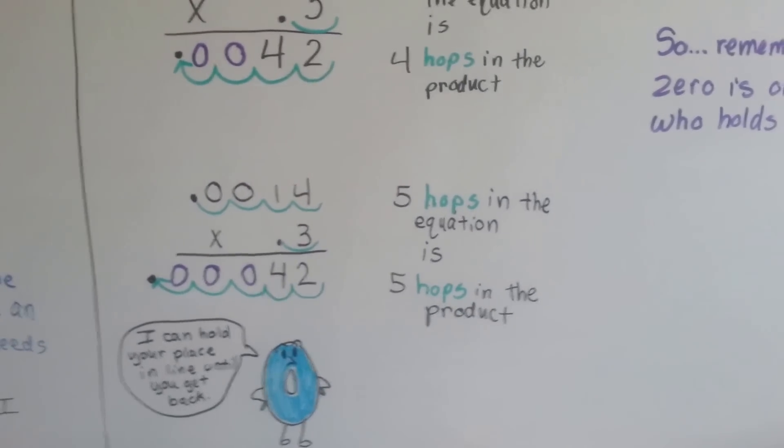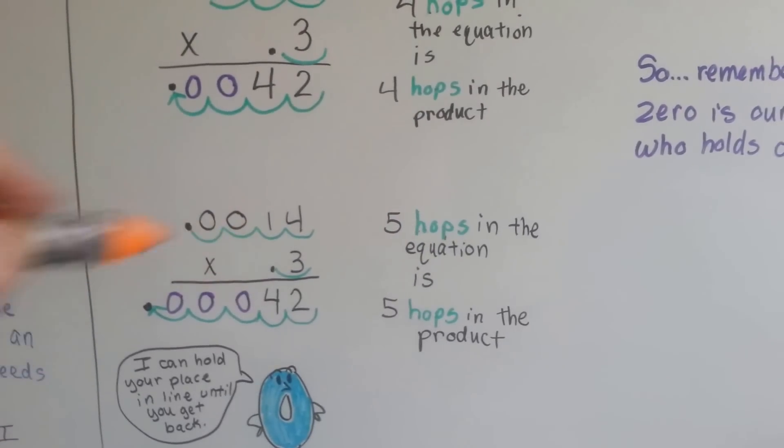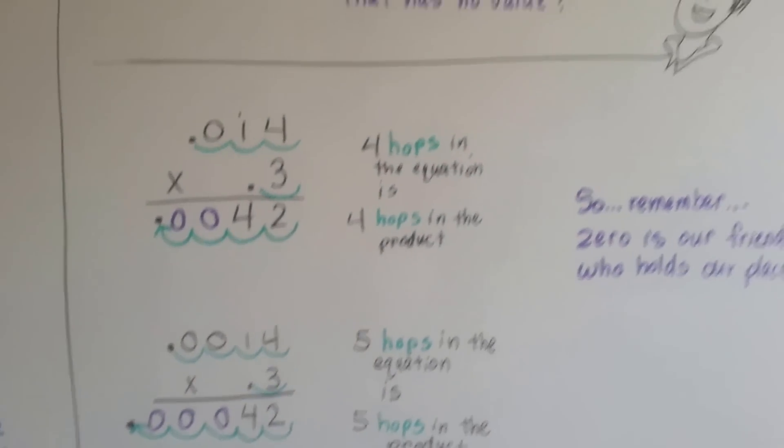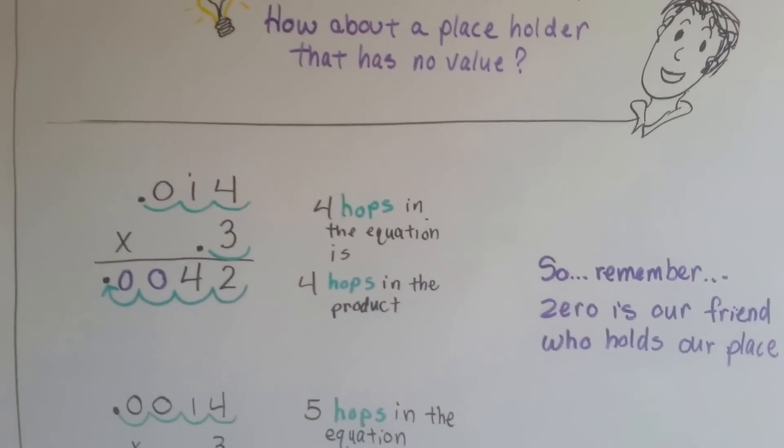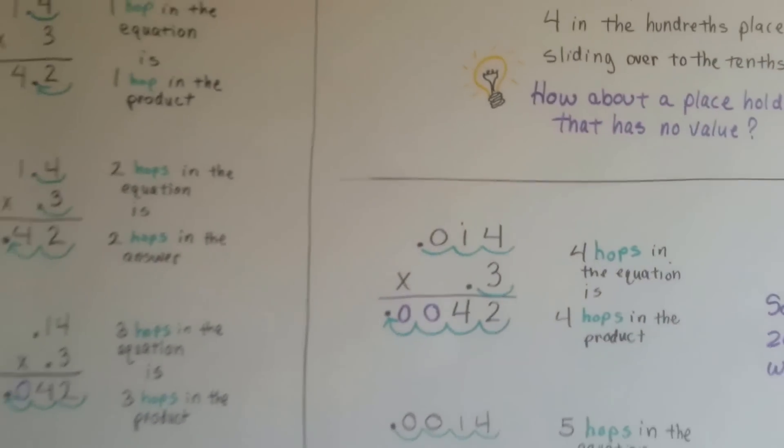So, the zero can hold the place. It has no value, and it's perfect. So remember, zero's our friend, and he holds the place, even though he has no value. That's how we put zeros in the product of decimals when we're multiplying. I'll see you next video. I hope this helped.